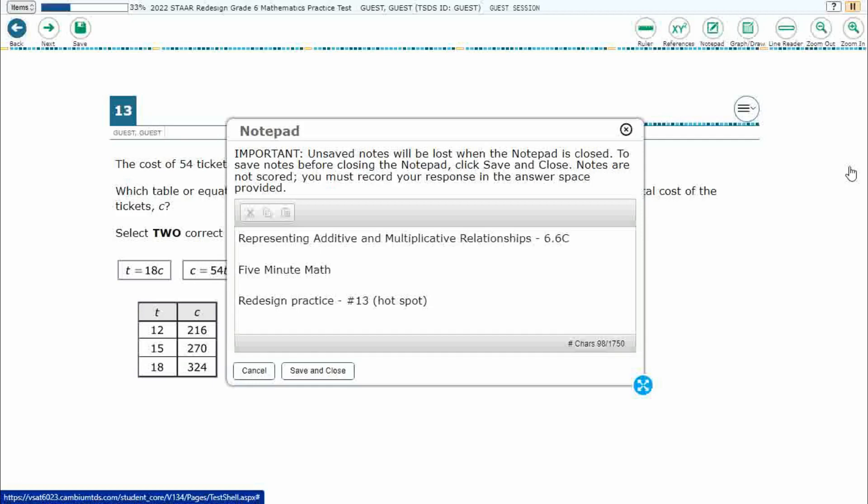Hello, and welcome to 5-Minute Math. Today we are looking at the 6th grade concept of representing additive and multiplicative relationships. This is standard 6.6c in the great state of Texas, and we are using item number 13, which is a new item type called Hotspot, off the Redesign Practice Online Star Test.